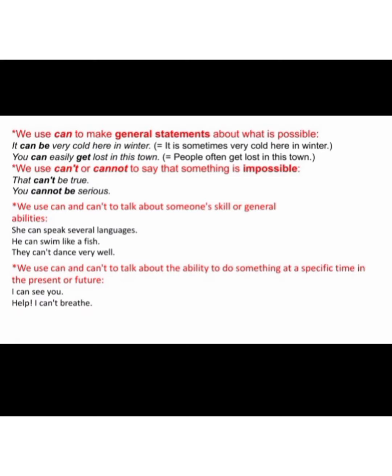First of all, we will take can and could — the usage of can and could. We use can to make general statements about what is possible. For example: 'It can be very cold here in winter,' meaning it is sometimes very cold here in winter. Another example: 'You can easily get lost in this town,' meaning people often get lost in this town.